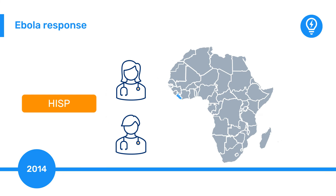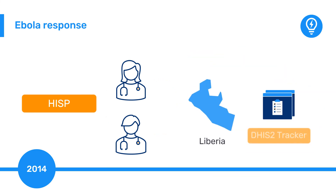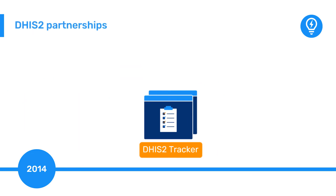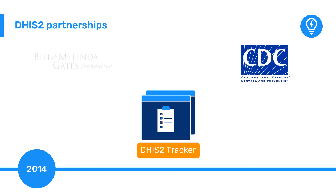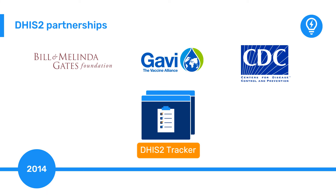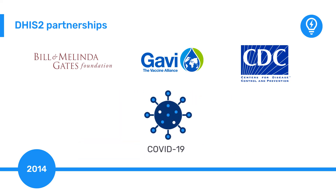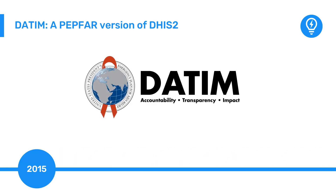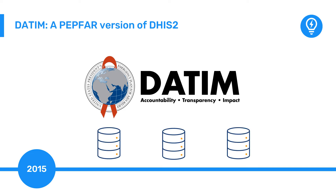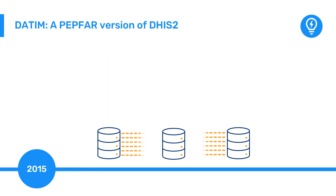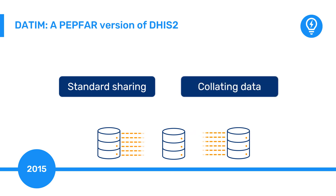In 2014, the HISP Network assisted health authorities in Liberia in deploying DHIS-2 Tracker for the Ebola outbreak response. With the support of the U.S. Centers for Disease Control and Prevention, the Gates Foundation, GAVI, and other partners, the initial tracker models deployed in Liberia have since been expanded upon for case-based surveillance of other diseases, including COVID-19. In 2015, Datim was launched, a PEPFAR-specific version of DHIS-2. Datim is used by PEPFAR in more than 50 countries and continues to be one of the largest examples of a global data warehouse within DHIS-2, sharing standards and collating subnational HIV data routinely across large and varied geographies.